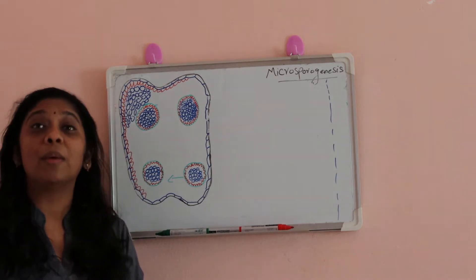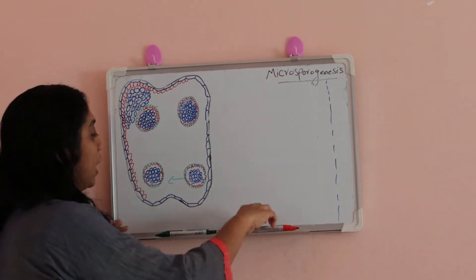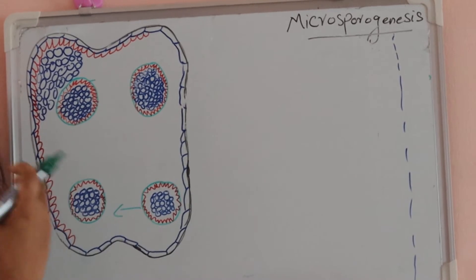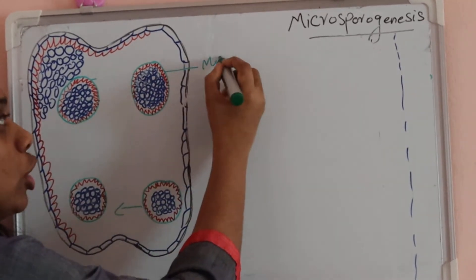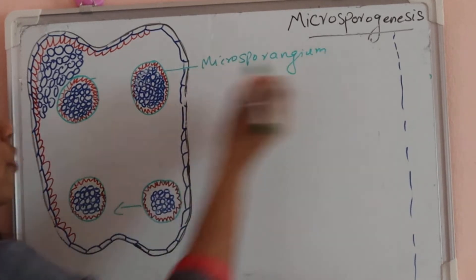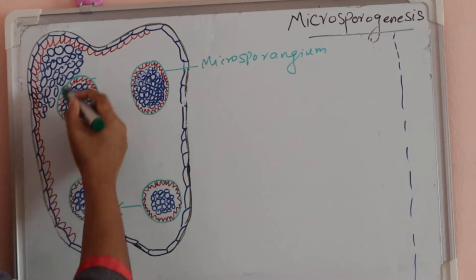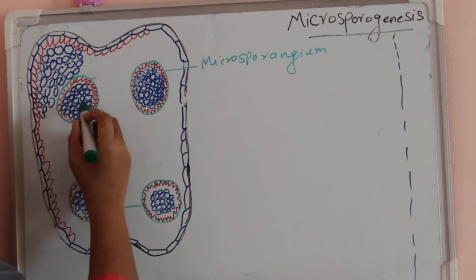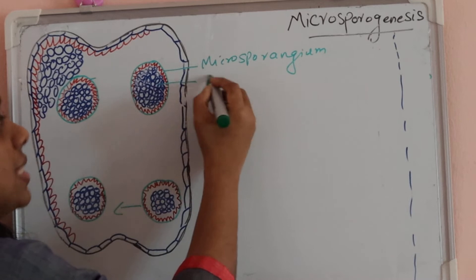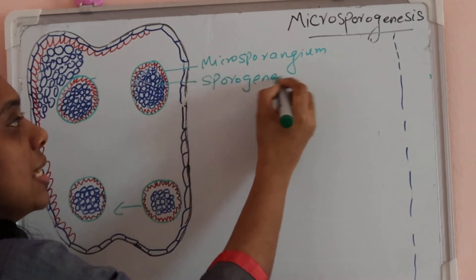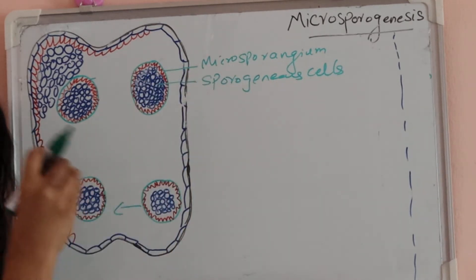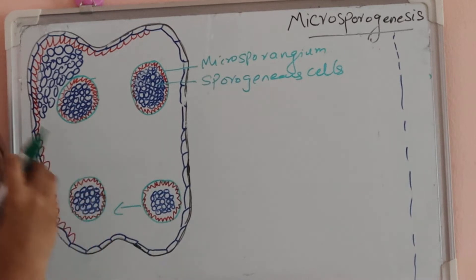Today we will talk about microsporogenesis. Here you can see this circular layer called the microsporangium. The innermost layer is the tapetum, and this structure is called the microsporangium. Inside, the cells which are compactly and tightly arranged are called the sporogenous cells.